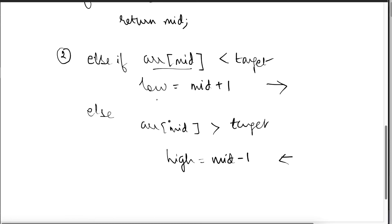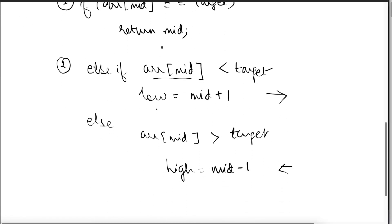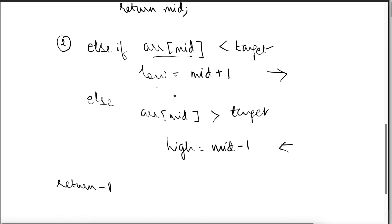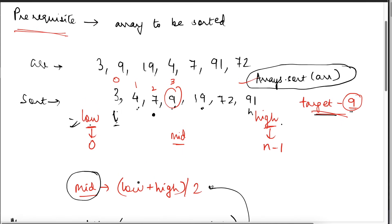This is what is going to happen inside this while loop till this breaks. When it breaks, we have to return minus 1. Why? If at all this condition turns out to be true means we have found our target element, we are only going to return mid. But if we never found the target element, we have to return minus 1. That's it.